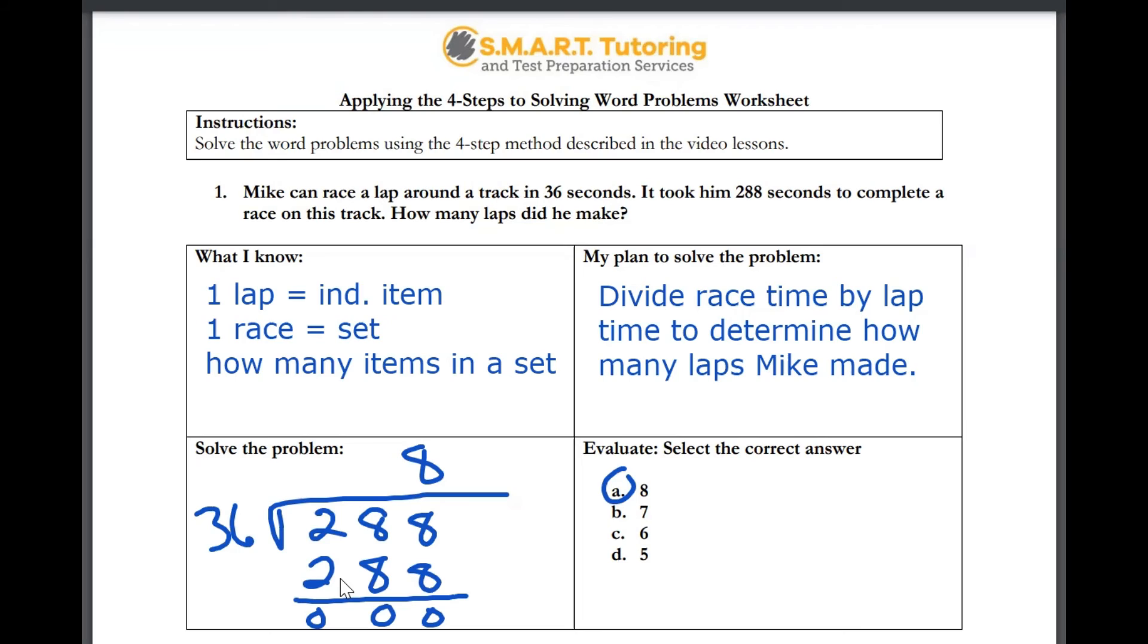When you move into step four, which is the final stage, you can see that A8 is your answer. In a testing situation, you would circle that and move on.